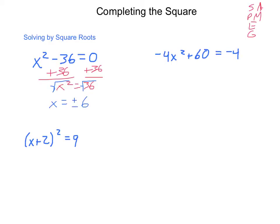My variable is isolated. If I were to substitute these values back in: 6 squared is 36, 36 minus 36 is 0. Negative 6 squared is positive 36, which minus 36 is also 0. So those are my two answers.